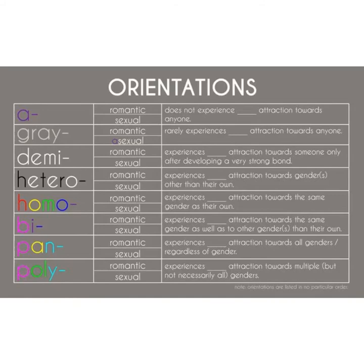Hundreds of charts and spectrums have been created to illustrate both romantic and sexual orientations, and in this slide I included one I found on Google. We have aromantic — someone who experiences little to no romantic attraction to people regardless of gender. Birromantic means you experience romantic attraction infrequently, and only after developing a strong emotional connection to someone. The same pretty much applies for hetero-, homo-, and bisexual peoples. Pan-romantic is when someone is romantically attracted to people of all genders, and polyromantic refers to attraction to people of many, not all, genders.